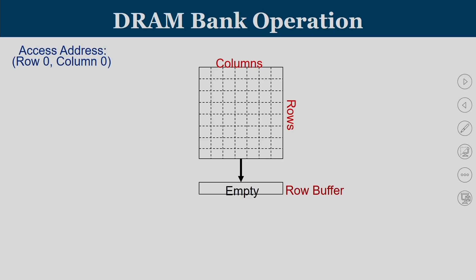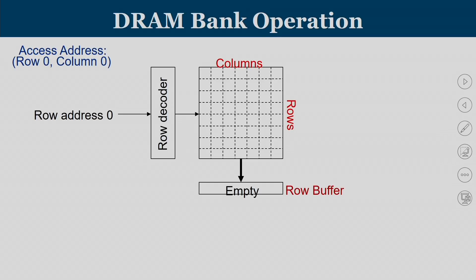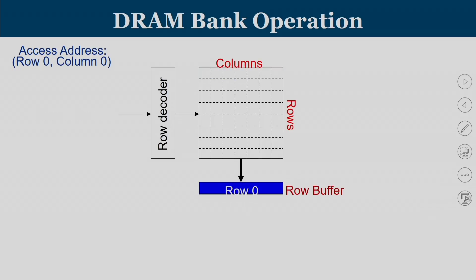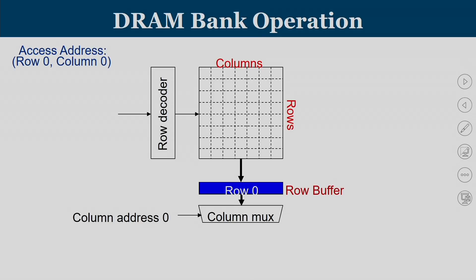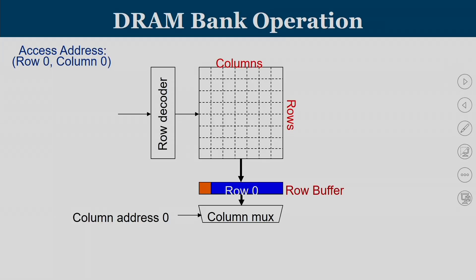Initially the row buffer is empty. If the CPU gives an address row 0 column 0, we first give row 0 — the contents of row 0 are activated, reaching the row buffer. Now the row buffer holds row 0. Then we give the column number: column address 0, so the 0th column's data is taken from the row buffer and transferred over the column multiplexer to the data bus.